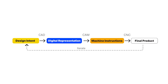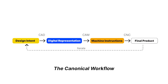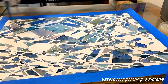As digital fabrication tools grow in popularity, practitioners develop and share workflows for using these tools. Traditional manufacturing workflows comprise computer-aided design and computer-aided CNC. We term these steps the canonical workflow. In the canonical workflow, the software tools for defining geometry are distinct from the programs that tell the machine how to create that geometry. This abstraction has been widely adopted by HCI fabrication researchers.